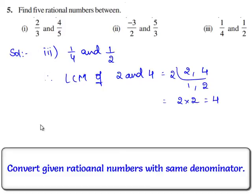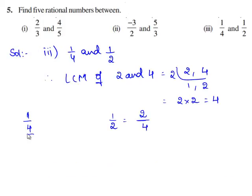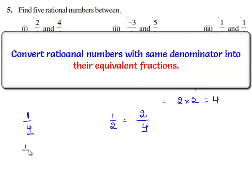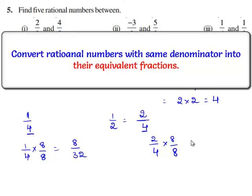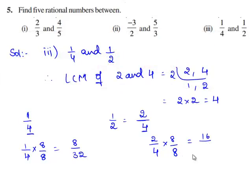Now, we shall write each of the rational numbers with the denominator as the LCM. Therefore, 1 by 4 itself is 1 by 4, and 1 by 2 can be written as 2 by 4. Now, we shall find the equivalent rational numbers for 1 by 4 and 2 by 4. Let us multiply 1 by 4 with 8 on both the numerator and denominator. So, we have 1 times 8 is 8 and 4 times 8 is 32. And also, we shall multiply 2 by 4 with 8 on both the numerator and denominator. Therefore, we have 2 times 8 is 16 and 4 times 8 is 32.